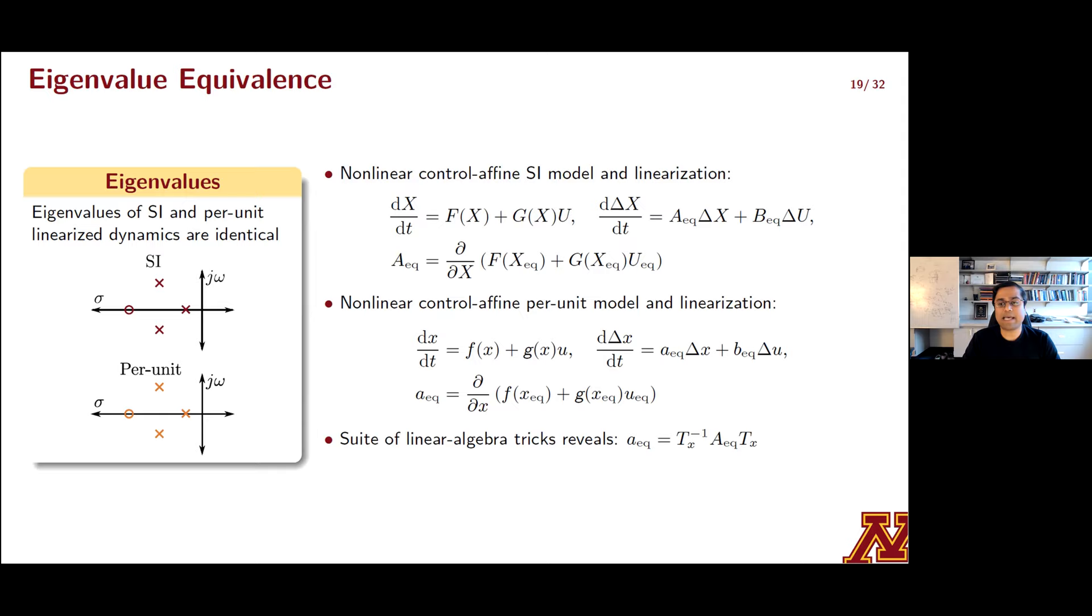We'll take a quick look at why the eigenvalues match. And this will set us up for examining linear systems in a second. Shown in the first bullet here are linearized dynamics of the SI model and the corresponding Jacobian matrix, capital A EQ. And then the Jacobian of the linearized per unit model is shown by small a EQ. So leveraging the relationships between small f and capital F, small g and capital G, and a bag of tricks from linear algebra, you can actually establish that small A EQ and capital A EQ are related through a similarity transform. And as a result, they share eigenvalues.